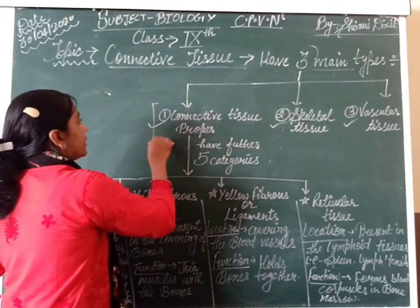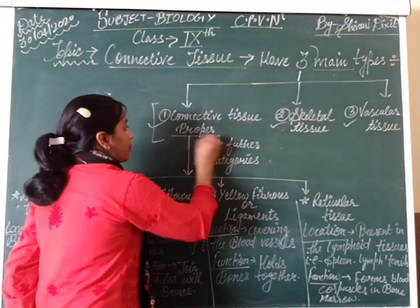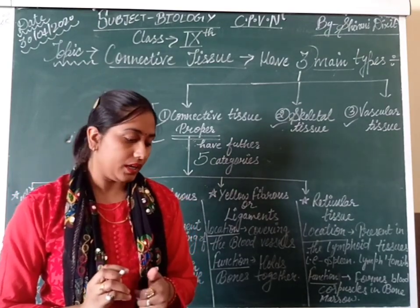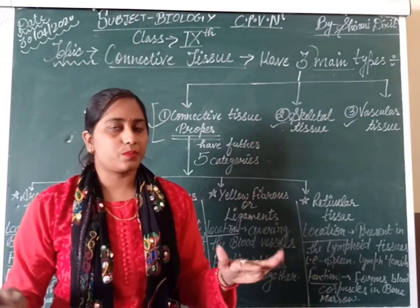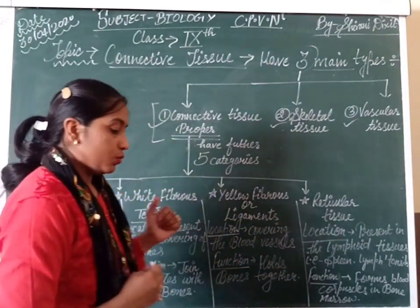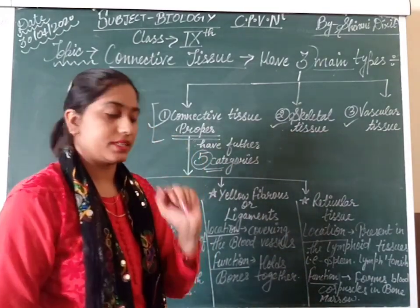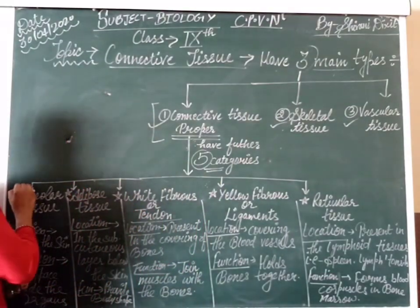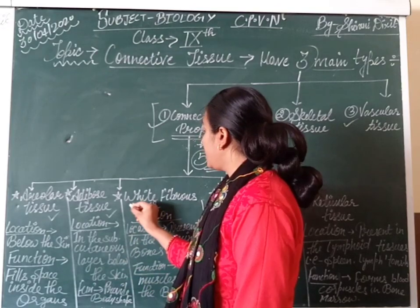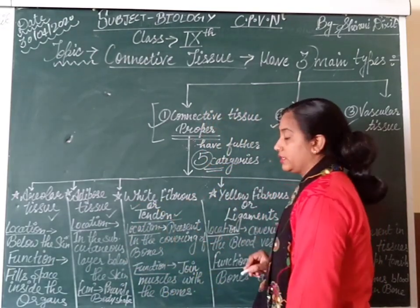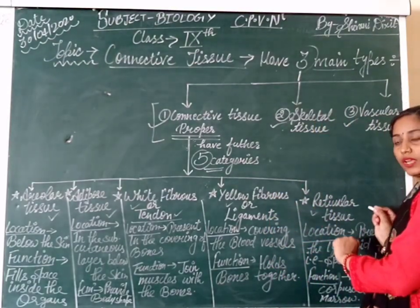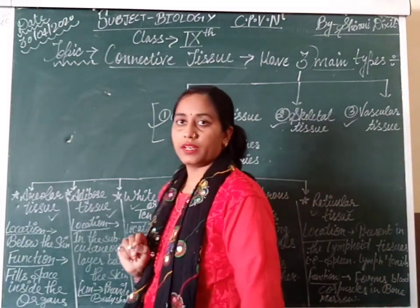We will focus on connective tissue proper. Connective tissue proper is widely spread throughout the body and performs various roles. It is divided into five categories: number one, areolar tissue; number two, adipose tissue; number three, white fibrous tissue or tendon; number four, yellow fibrous tissue or ligament; and number five, reticular tissue.